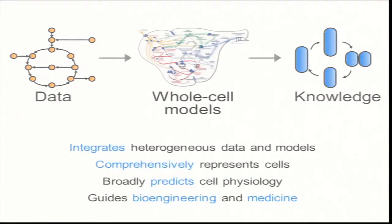So, just to summarize quickly, whole-cell models can be used to integrate heterogeneous data and mathematical models into a single unified theory. We can use these models to comprehensively predict cell physiology. And I think, in the future, these are going to be very powerful tools for biological design, as well as for personalized medicine. Thank you very much.